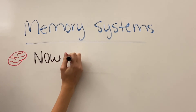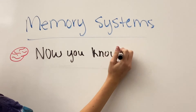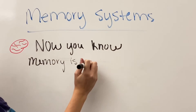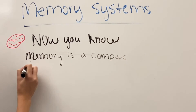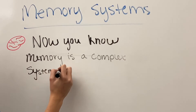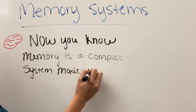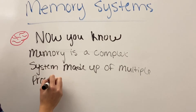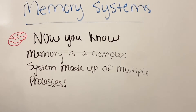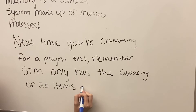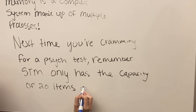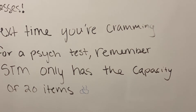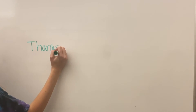Hopefully after this review, you have a better understanding of all of our memory systems, which include iconic, echoic, short-term, long-term, and working memory. Thanks for watching!